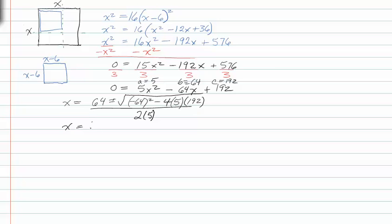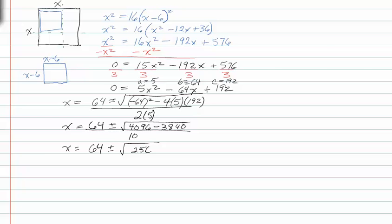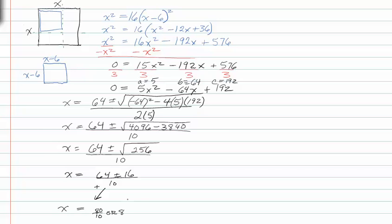So x is equal to sixty-four plus or minus the square root of four thousand ninety-six minus three thousand eight hundred forty, all over ten. This simplifies further to sixty-four plus or minus the square root of two hundred fifty-six over ten, and simplifying even further, sixty-four plus or minus sixteen over ten. Taking the positive gives x equal to eighty over ten, or eight, and taking the negative gives x equal to four point eight, or forty-eight over ten.